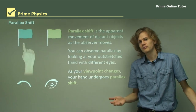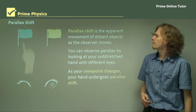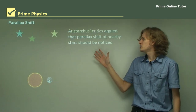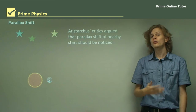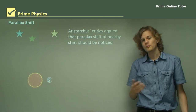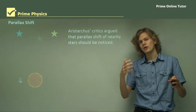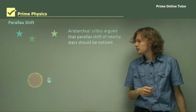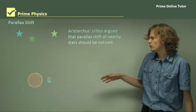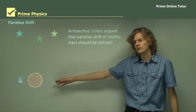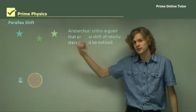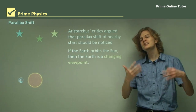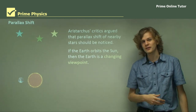So how does this apply to models of the universe? Aristarchus's critics argued that parallax shift of the nearby stars should be noticed. Most Greek philosophers accepted that there were one or two stars inside the big outer sphere of stars. They expected that when the Earth moved back and forth around the Sun, there should be some parallax shift. So if the Earth orbits the Sun, then the Earth is a changing viewpoint.